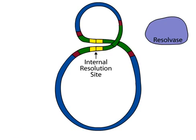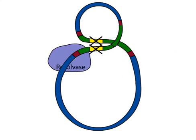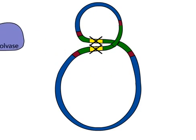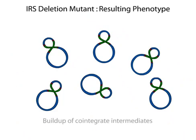In an IRS deletion mutant, the site of resolution is absent. Without its recognition site, resolvase cannot initiate resolution. The end result is a buildup of cointegrate intermediates in the bacterial cell.